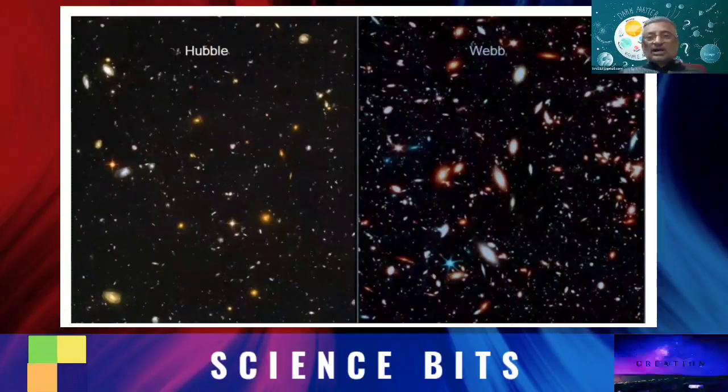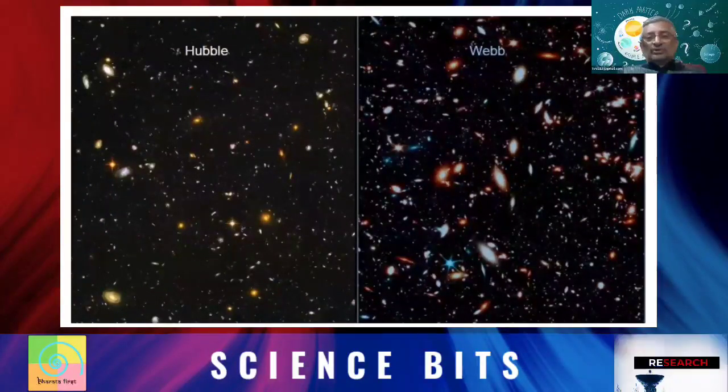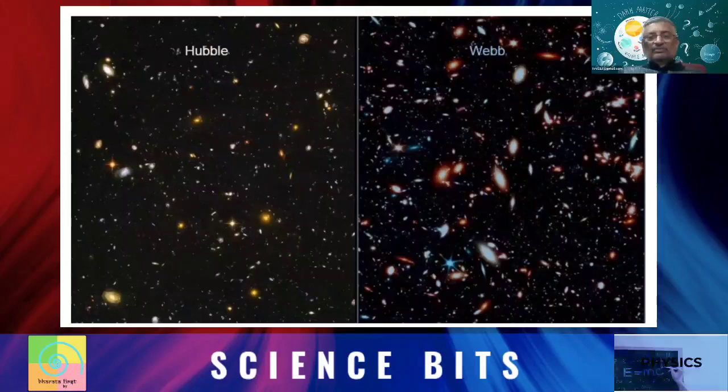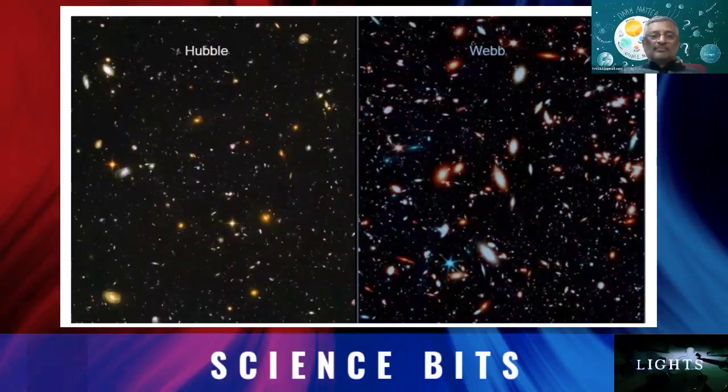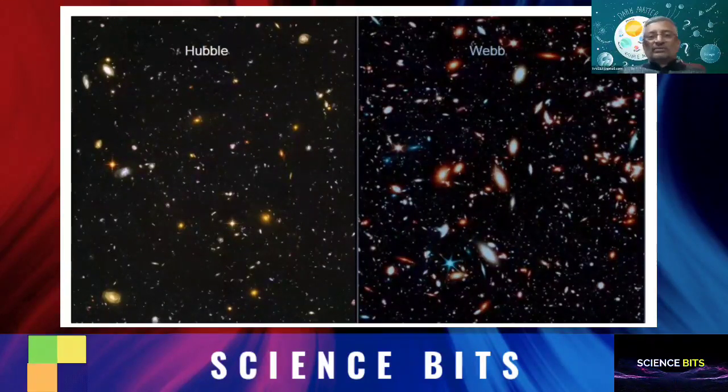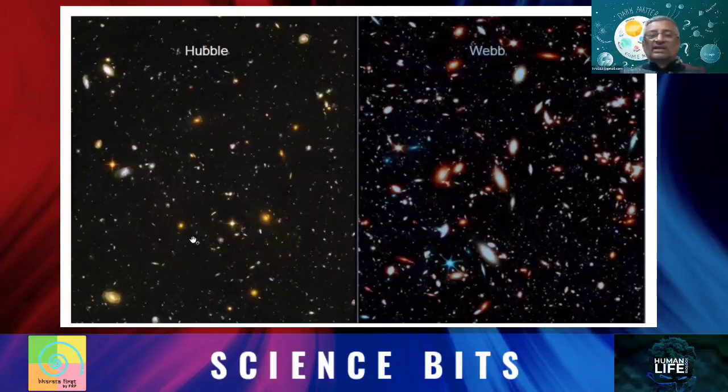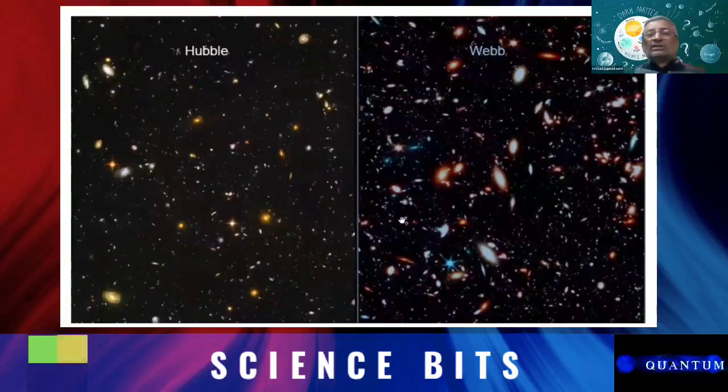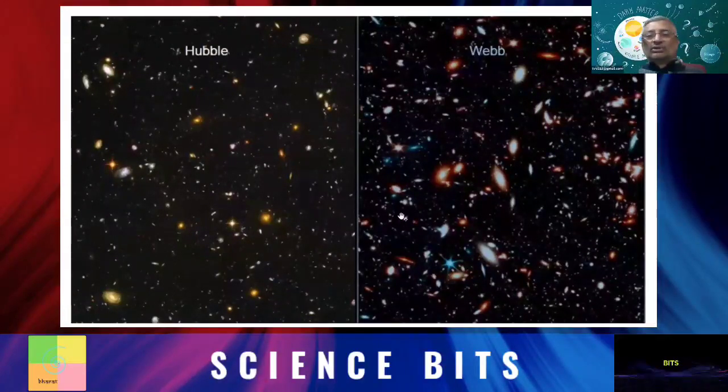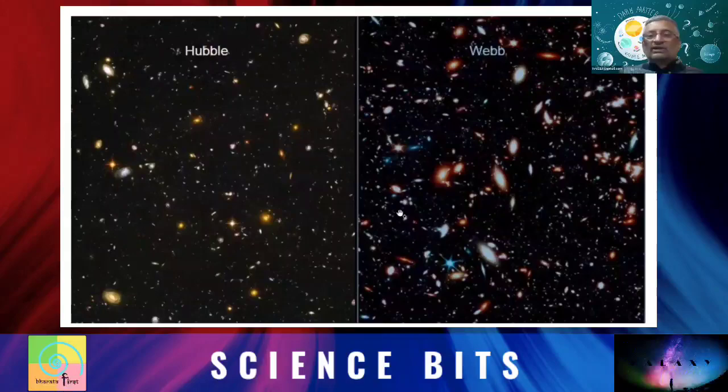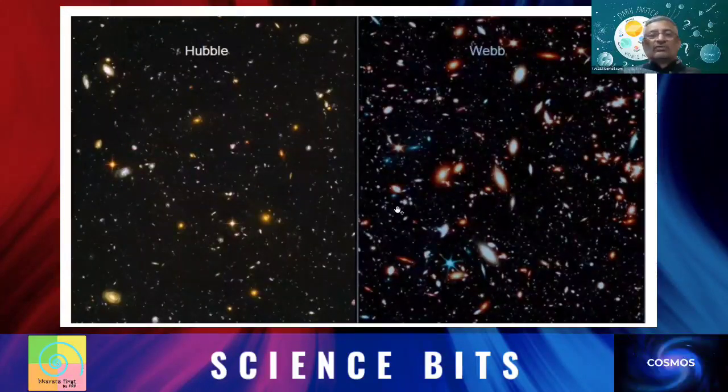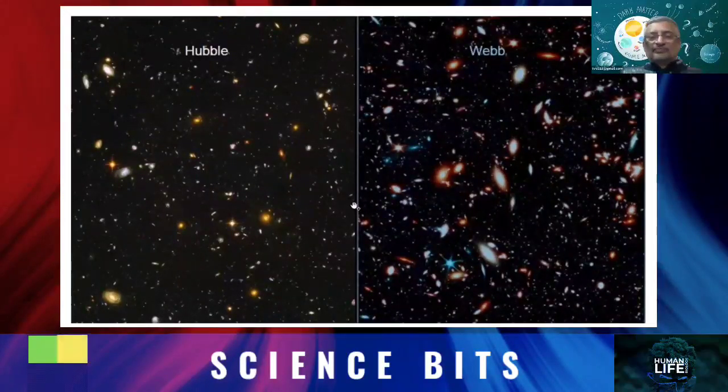So if you compare the Hubble and Webb, this is a computer generated image. The image of Webb is said to come through computers. You can simulate that if Webb was looking at the same area as Hubble, what would be the new objects, how bright, how shining, how even dimmer objects will come to our visibility. That's what we know.